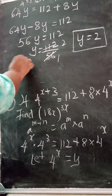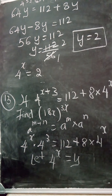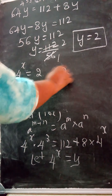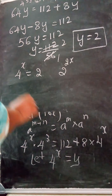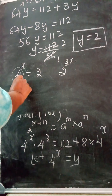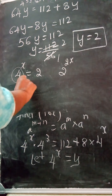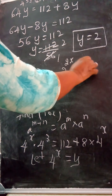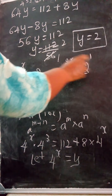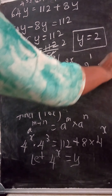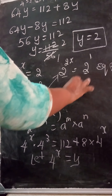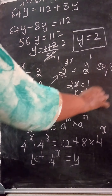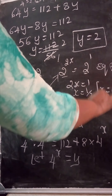So y = 2, meaning 4^x = 2. Since 4 = 2², we write 2^(2x) = 2^1. Since the bases are the same, equate the powers: 2x = 1, so x = 1/2, which equals 0.5.